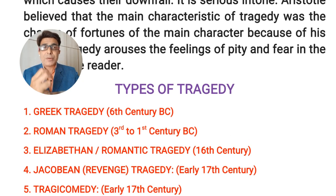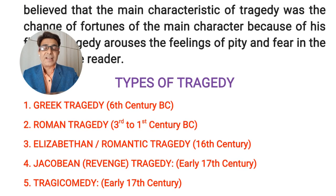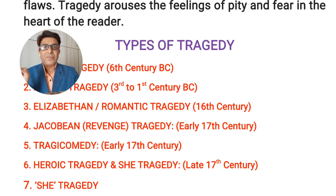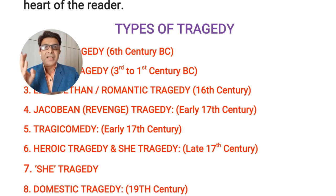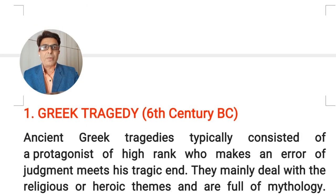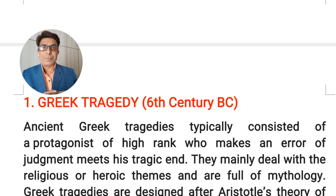Now let's look at the different types of tragedies in English literature. There are a total of eight types: Greek tragedy, Roman tragedy, Elizabethan tragedy, Jacobean tragedy, tragicomedy, heroic tragedy, she tragedy, and domestic tragedy. Let's now start the discussion of all these eight different types one by one.